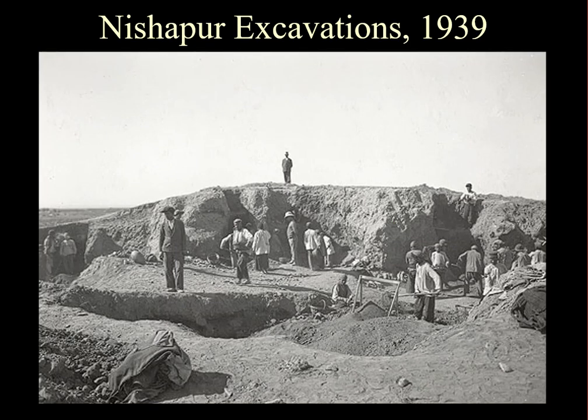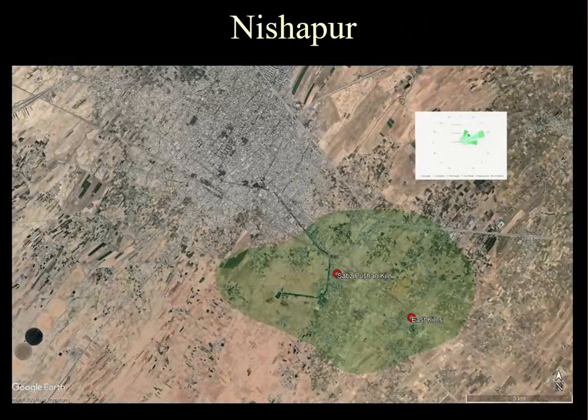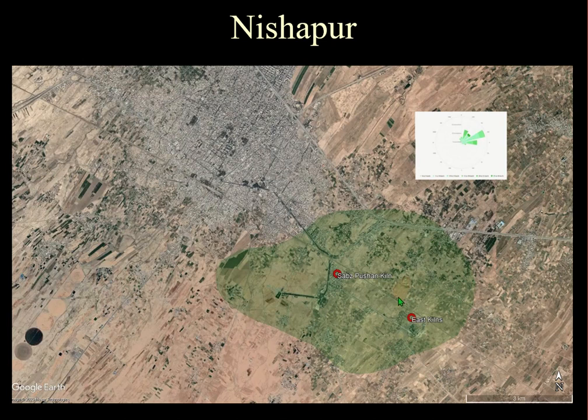One of these sites is Nishapur in northeast Iran, which was a massively important city on the Silk Road and very wealthy. It was the site of very early excavations by a team from the Metropolitan Museum of Art in New York under Charles Wilkinson. Here we have a picture of the excavations in 1939. This is the area of early medieval Nishapur — this is the Tell, which was the site of the excavations.